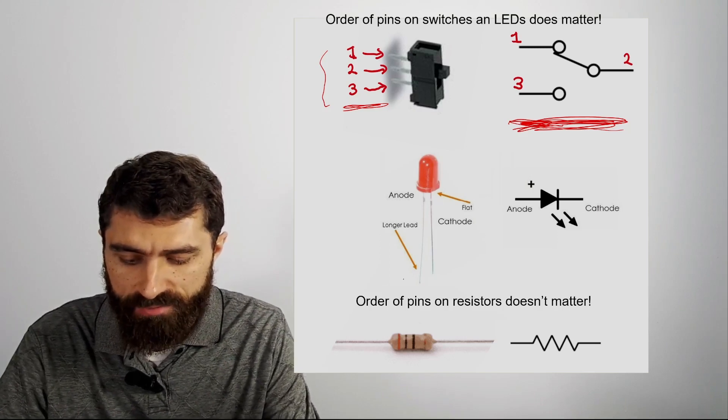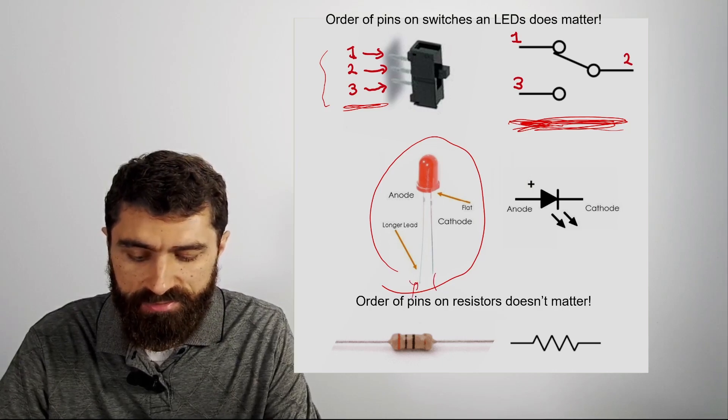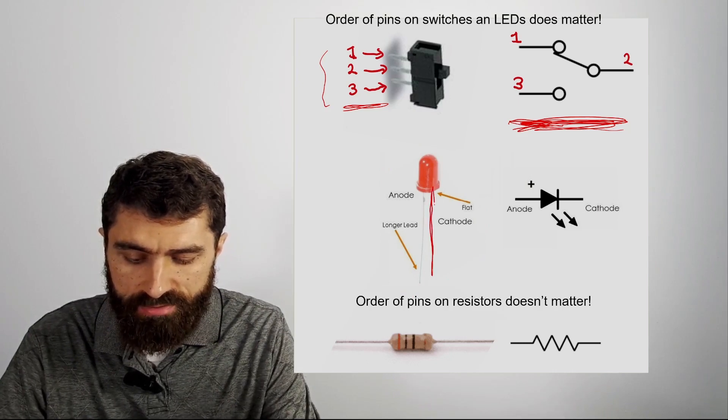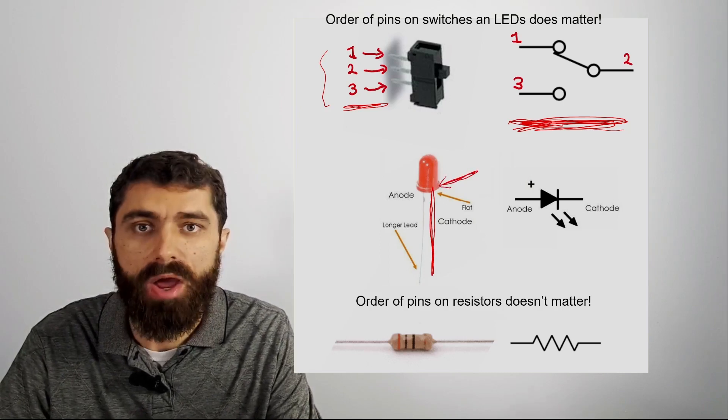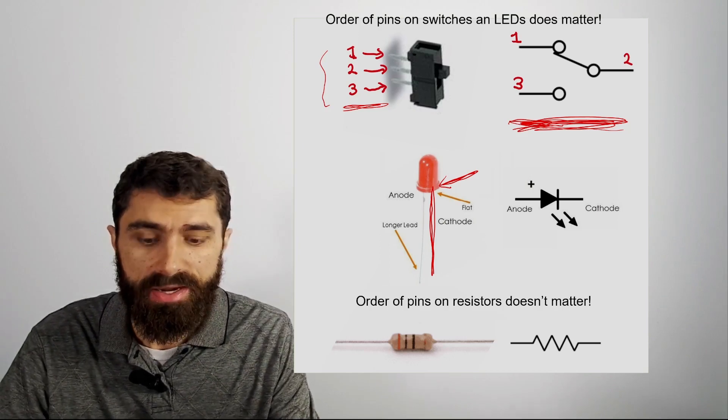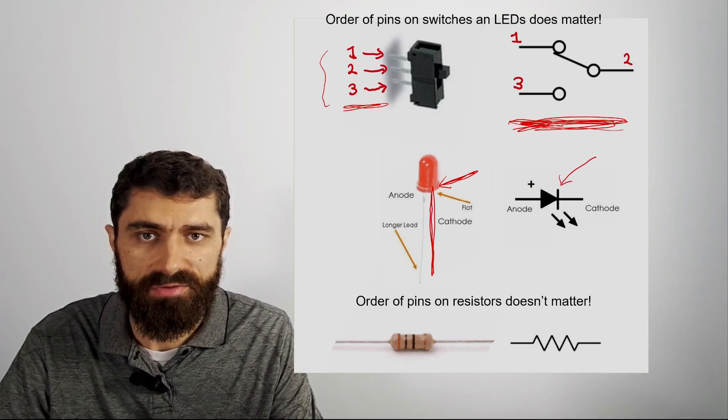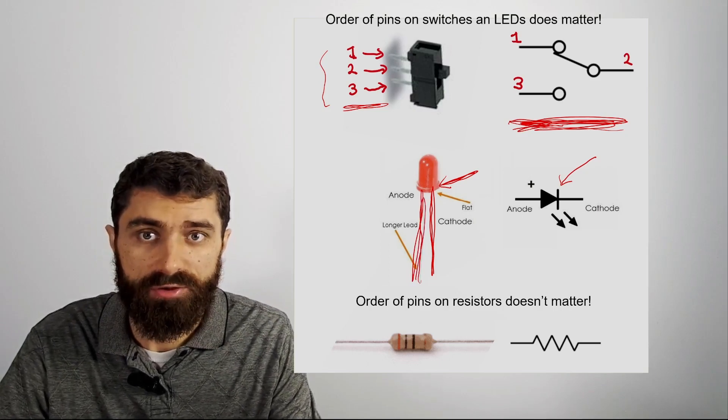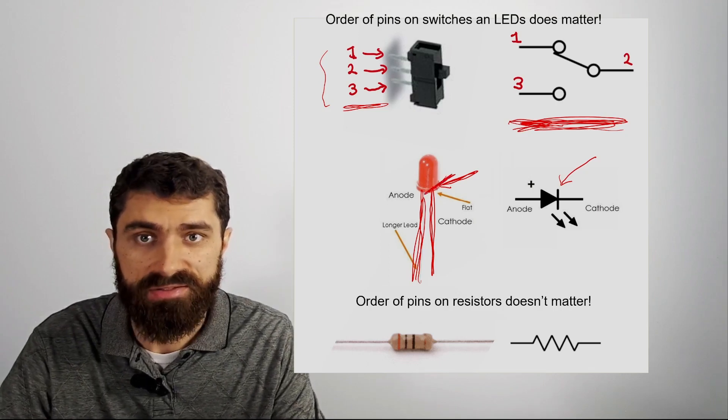In the same way we have your LEDs here and the order of the pins on an LED do matter. So the lead here, this shorter one, that's called the cathode. And you can identify it by noticing a little flat spot on the LED. And that tells you it's the cathode. And that corresponds with the flat spot here on the circuit schematic symbol there. The other lead is called the anode and it's typically longer. But the definitive way to tell which is the anode and which is the cathode is to look at this little flat piece on the LED.